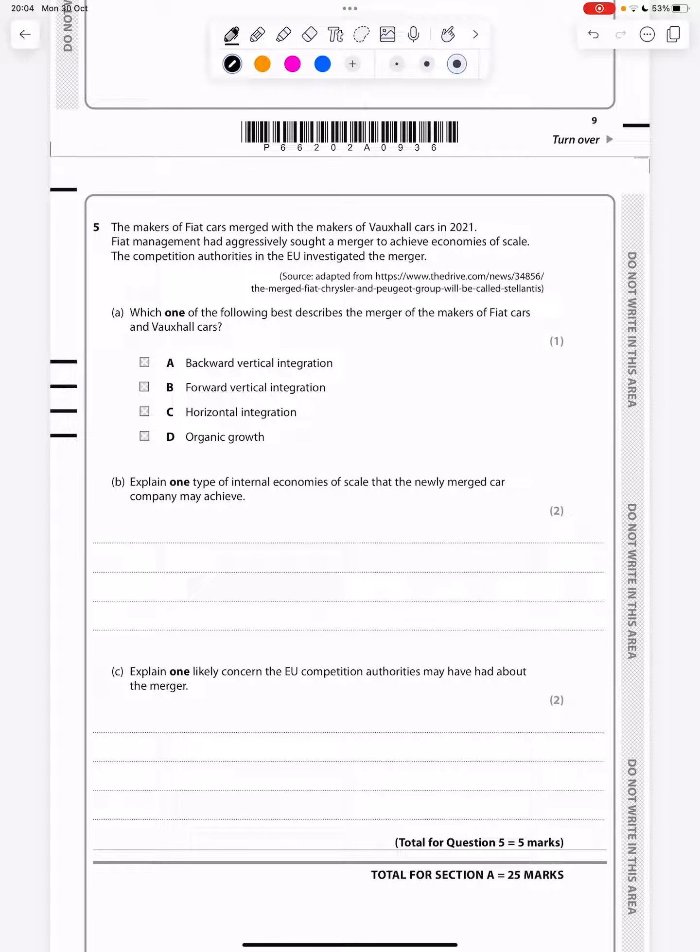Question five: The makers of Fiat cars merged with the makers of Vauxhall cars in 2021. Fiat management had aggressively sought a merger to achieve economies of scale. The competition authorities in the EU investigated the merger. Which one of the following best described the merger? They're pretty similar in nature. They're not at different points in their production process, which means vertical is not correct. Neither forward nor backwards is correct. Organic growth is wrong because that's when you don't grow by purchasing other companies. The only correct one is horizontal integration. They're at the same stage of their production process.